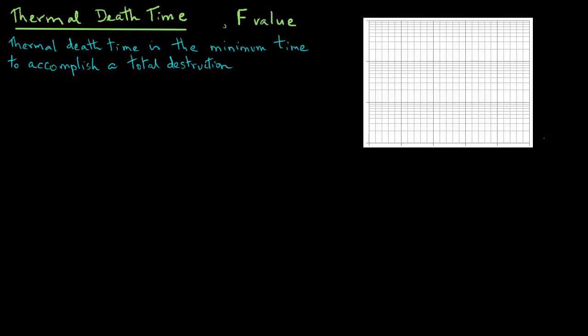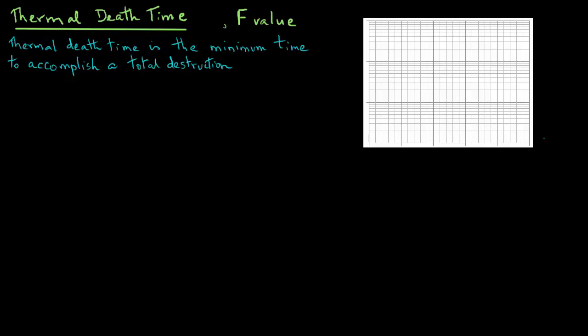So let's look at a semi-log graph. On the y-axis we have the thermal death time in minutes, and on the x-axis we have temperature in degrees Celsius. It has been observed through experiments that one obtains a straight line on the semi-log graph if you plot thermal death time against temperature.